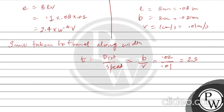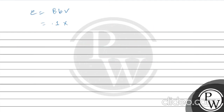The magnetic field is 1.3 Tesla, velocity is 0.01 m/s, and our breadth (small b) is 0.02 meter. The multiplication gives EMF = 1.3 × 0.02 × 0.01, which comes out to be 0.6 × 10⁻⁴ volts.